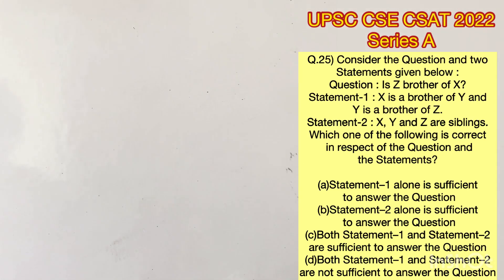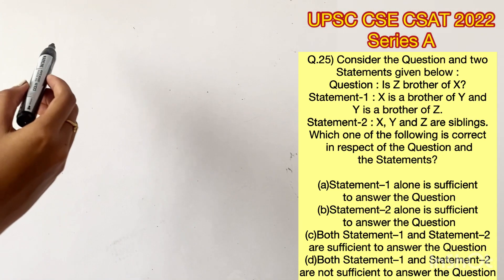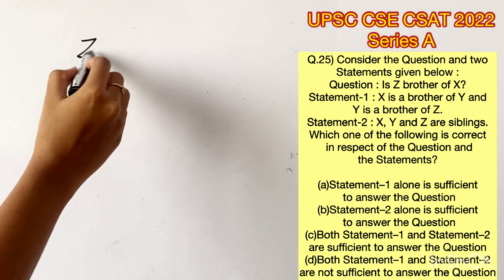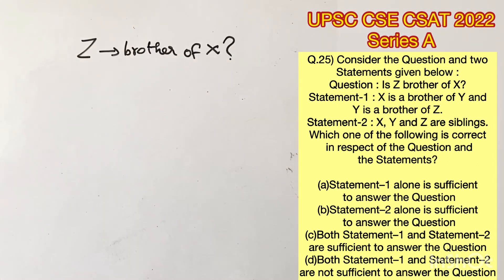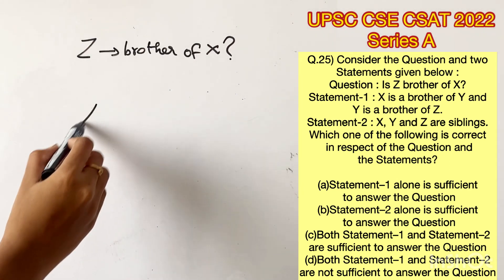Please pause the video and read the question completely. Now here we are supposed to find if Z is the brother of X. This is a data sufficiency sum. They have given two statements. We are going to check if it's enough to answer this question.